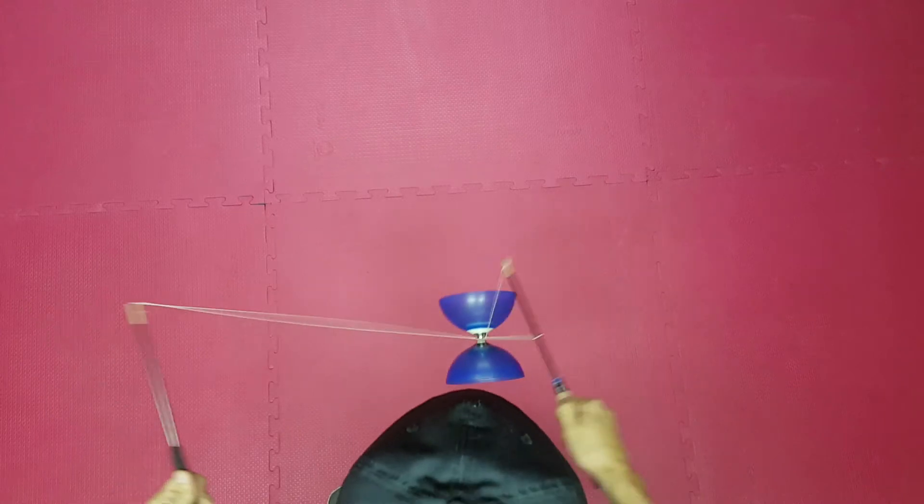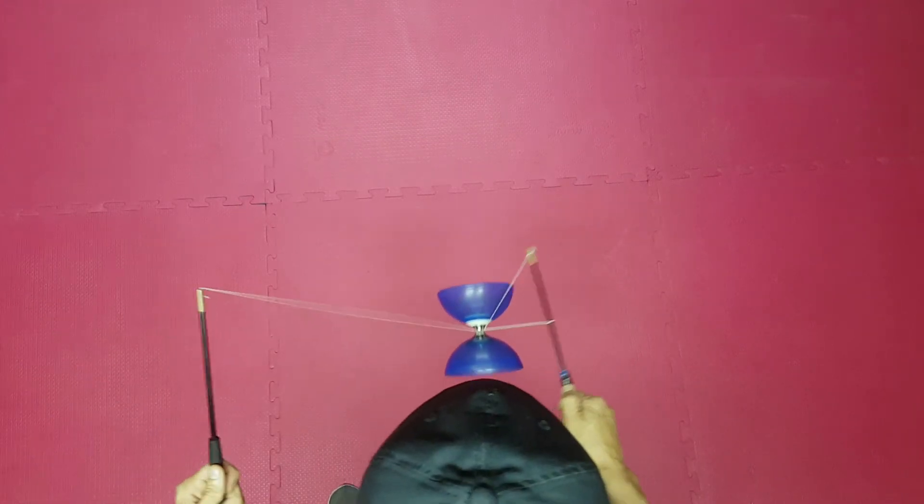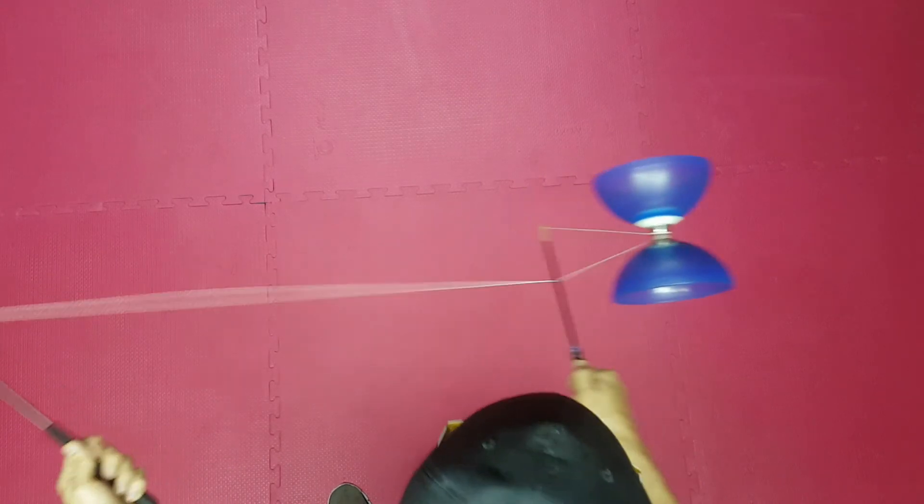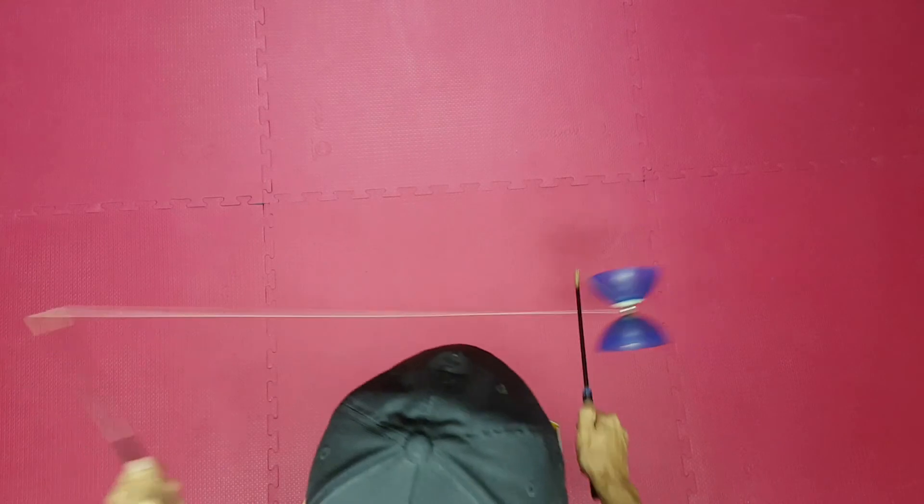By easing the tension we collect the momentum to throw the Diabolo over the right stick. The Diabolo will return to the initial position.